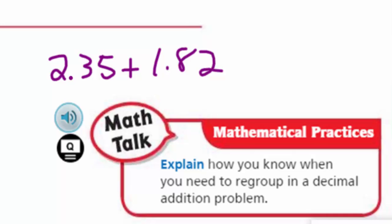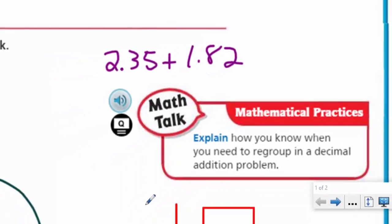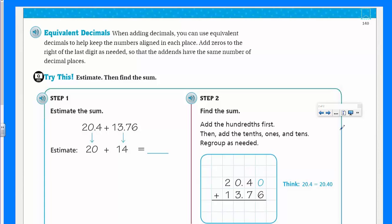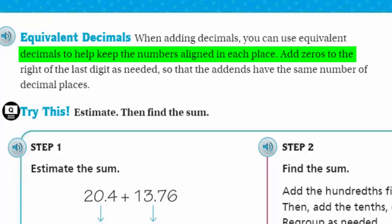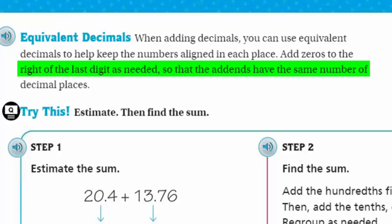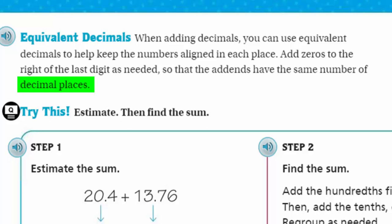Yes. And again mathematical practices as we look over here. It says explain how you know when you need to regroup in a decimal addition problem. Well I know that we need to regroup whenever we have nine hundredths or more or nine tenths or more. Whenever we get that group of ten we need to regroup regardless of the decimal place that it falls in. Yeah I like it. My goodness is so easy. Easy peasy lemon squeezy. Yeah. Okay page master. Yes. Thank you sir. Equivalent decimals.